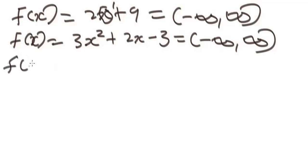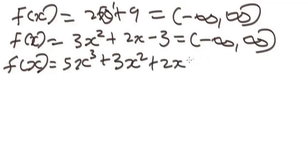So this is one more example. We have a cubic function with the highest power of x. That means we have 5x cubed plus 3x squared plus 2x minus 5. So the domain of this function is still all real numbers from negative infinity to positive infinity.